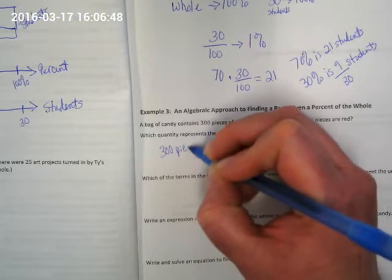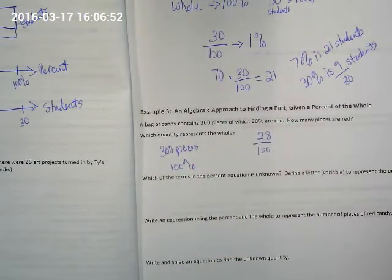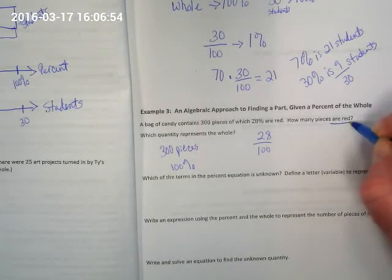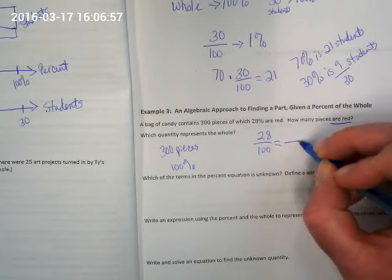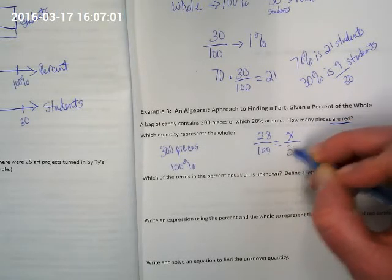So which quantity represents the whole? We have both 300 pieces and 100%. If we want to know how many pieces are red, we can compare that part and whole to the unknown part and the known whole.